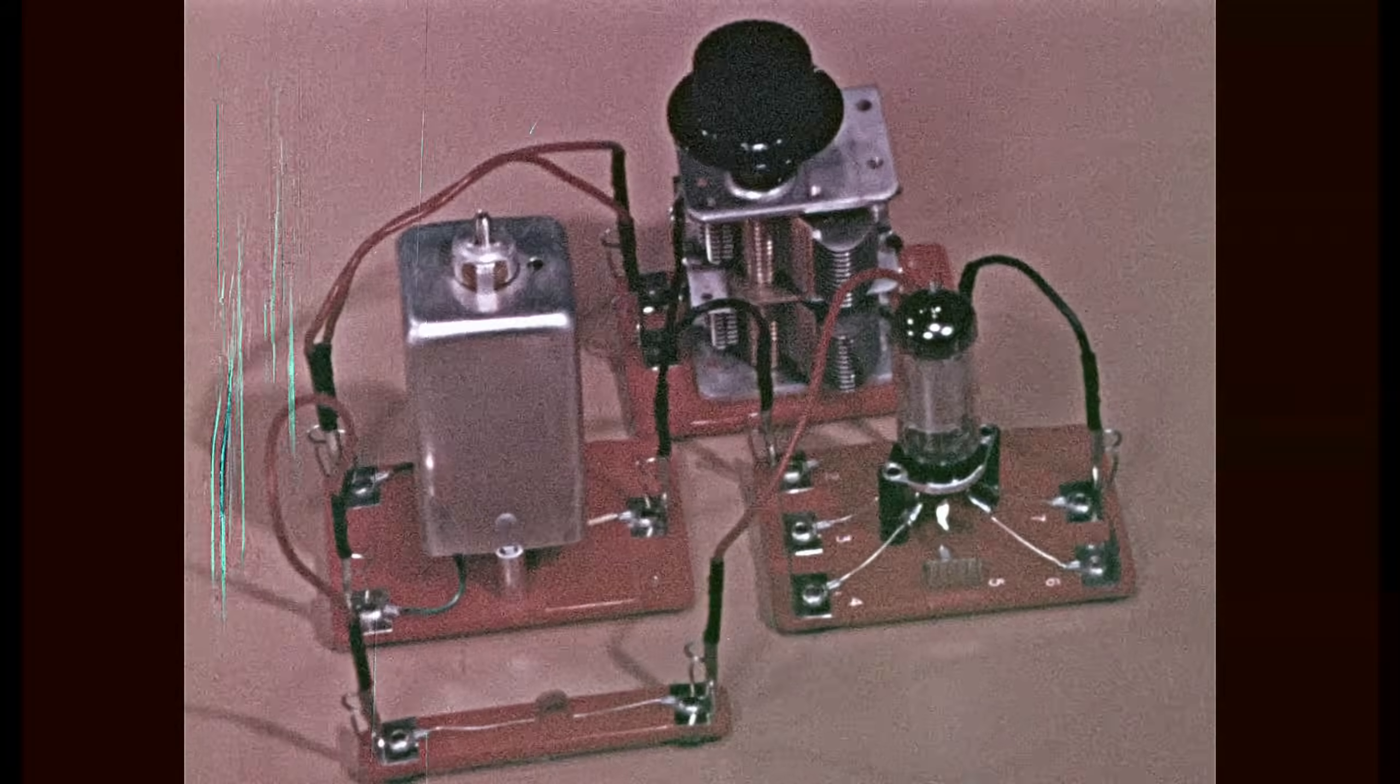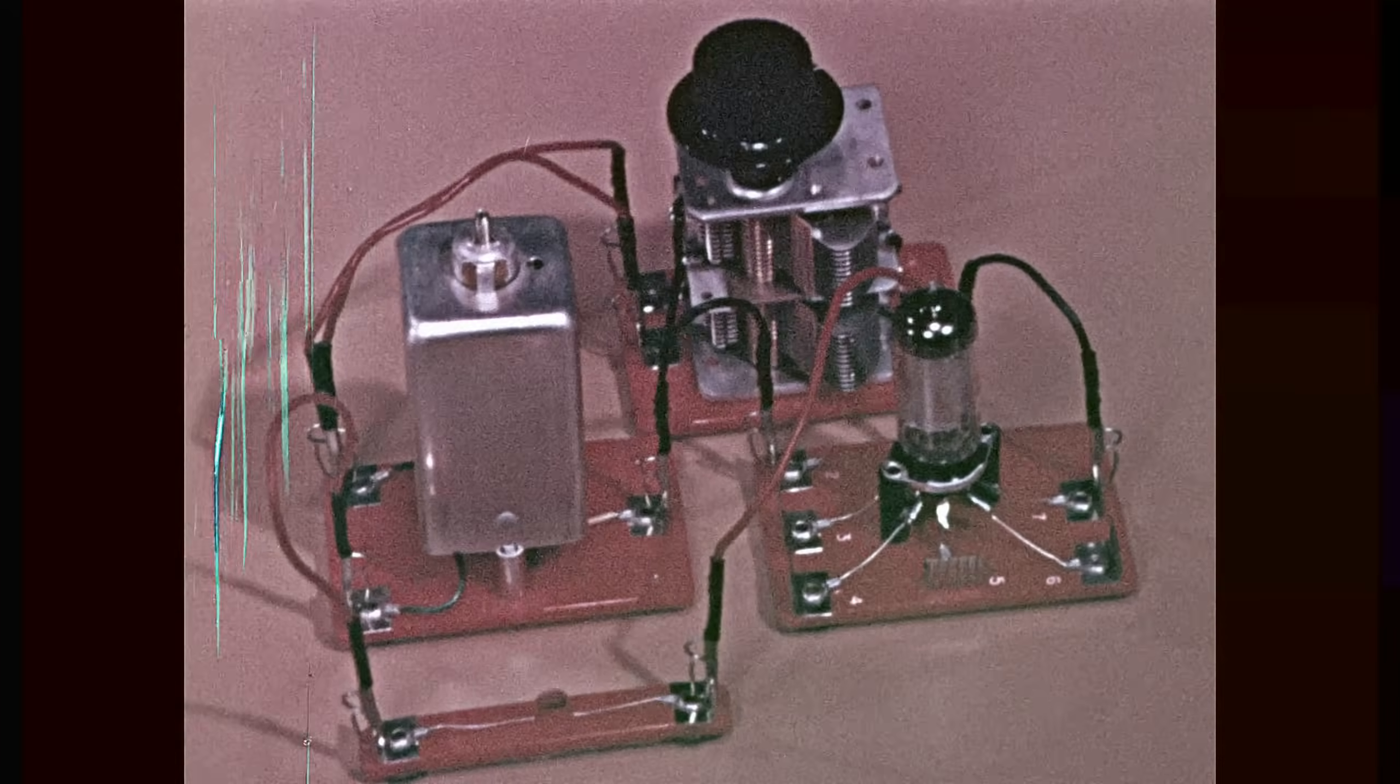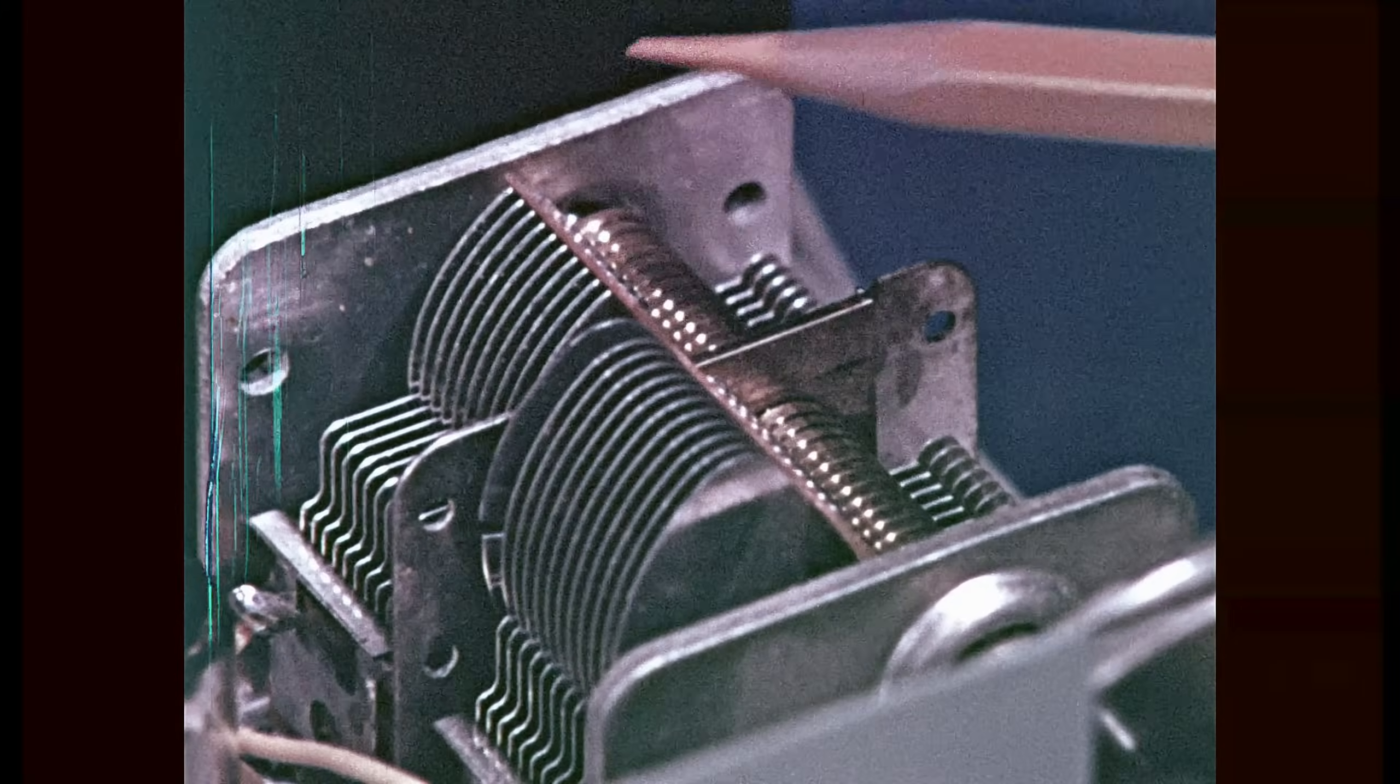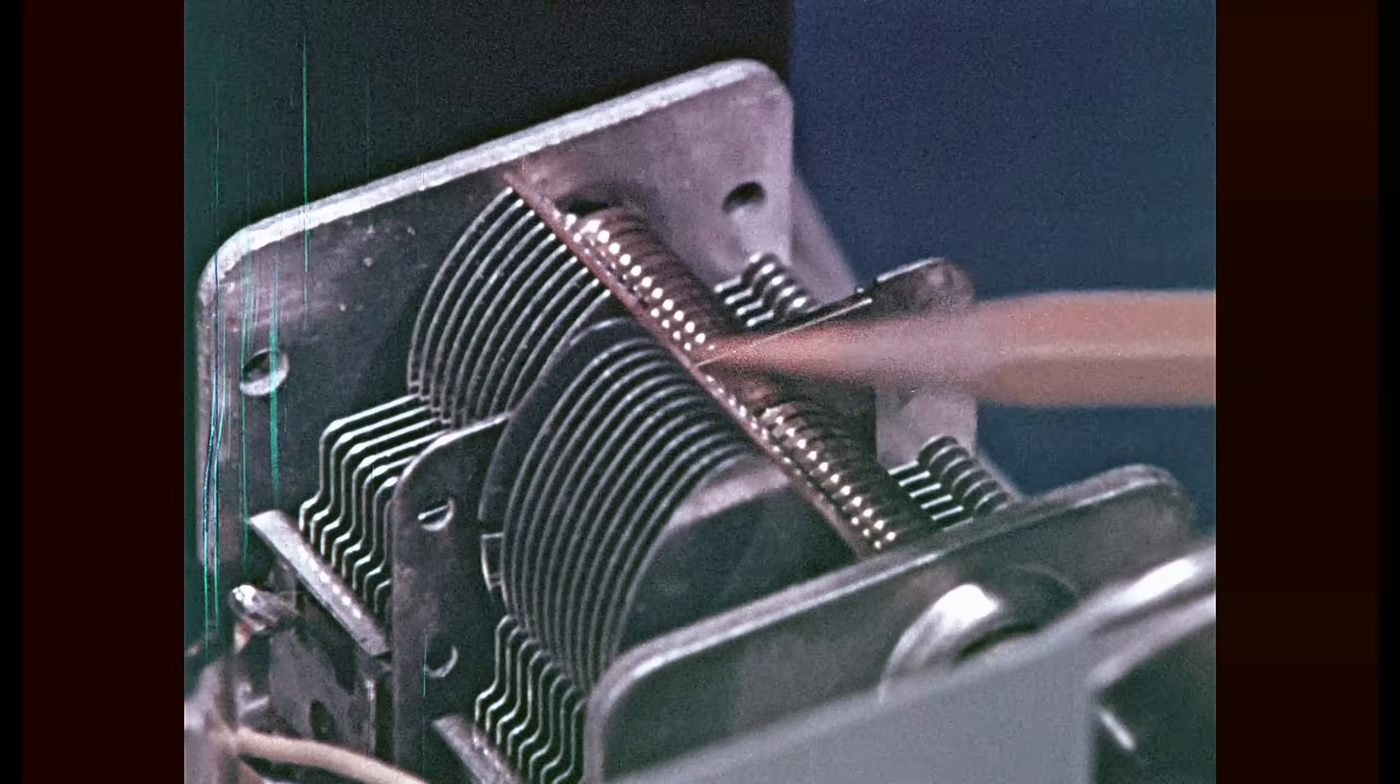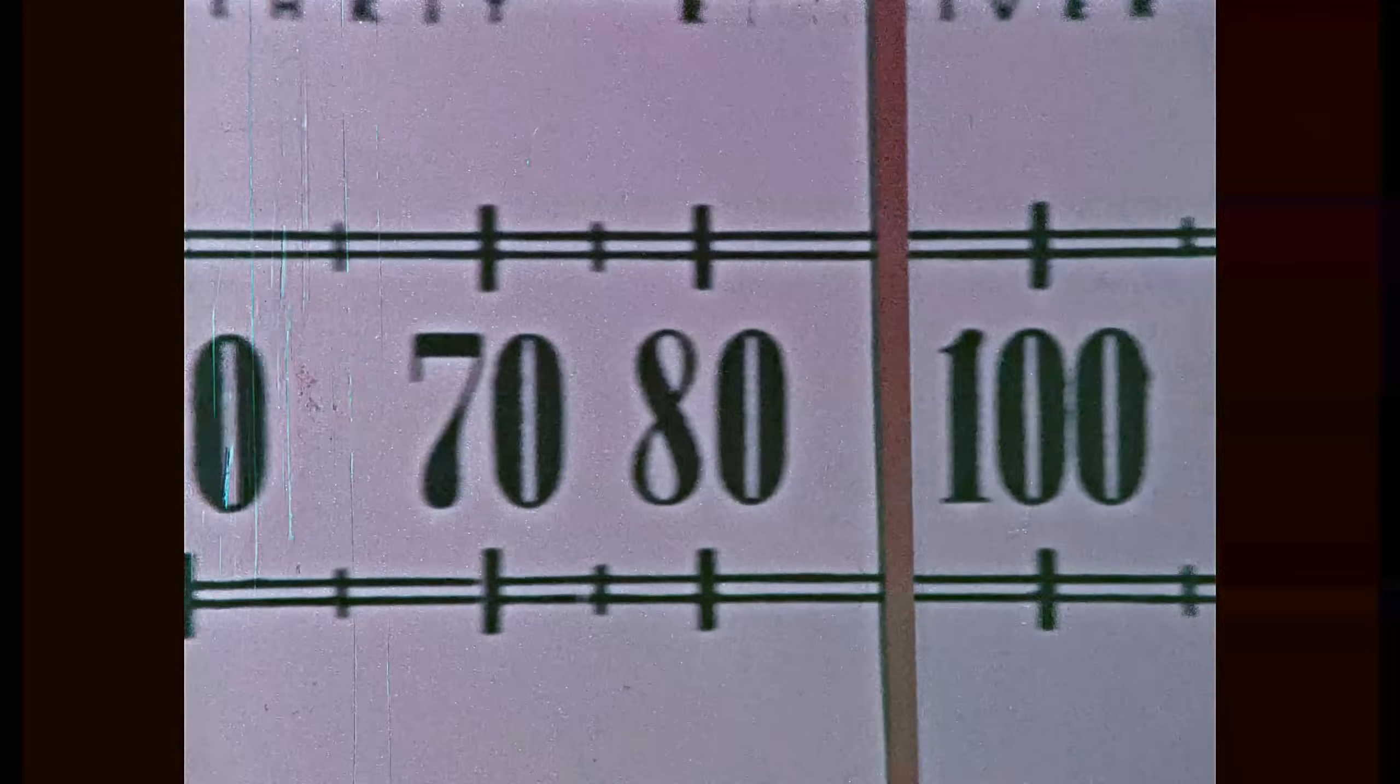The selected RF signal is then mixed or heterodyned in the converter tube with a higher frequency signal generated by a local oscillator in the receiver. The oscillator is tuned by one section of a gang capacitor according to the tuning of the other section in the antenna circuit, so that the difference frequency called the intermediate frequency is kept constant. It's usually 455 kilohertz in home receivers. Through the whole range from 540 to 1600 kilohertz, the IF amplifiers work on one constant frequency.